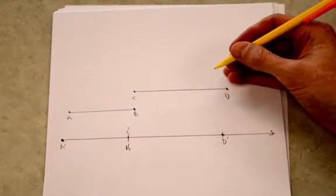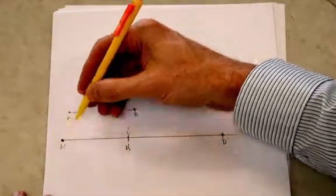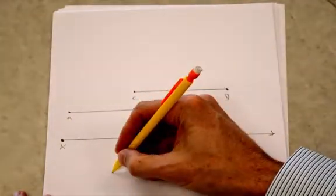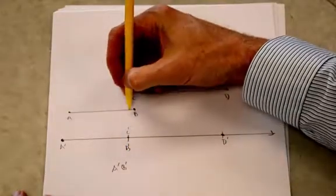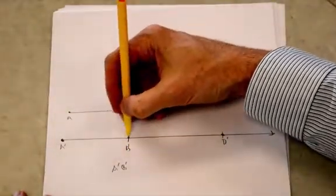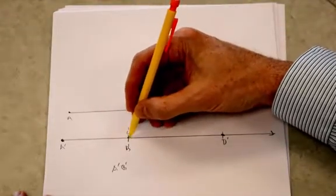Now if I'm going to write the segment addition postulate for this, it's going to be segment A prime, B prime. And really it's the same as segment A, B. It's just translated down here. Now what do you do here? Because this B prime and C prime, it's the same point.